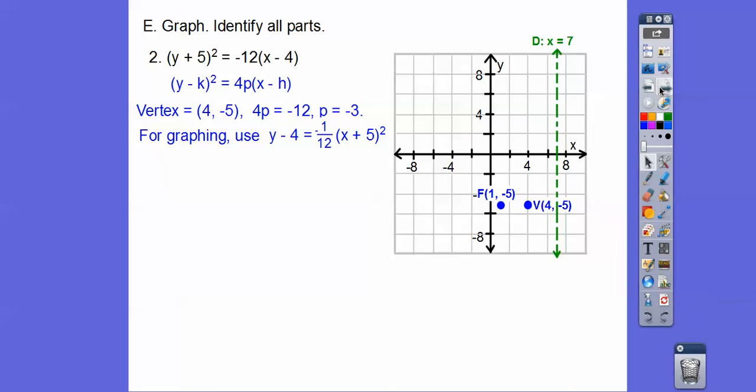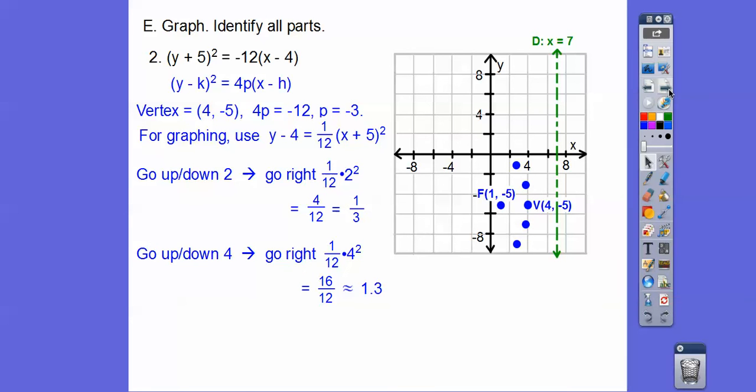So 1/12 of 1 squared, I'm going up and down 2, and it's going to be 1/12 of 2 squared. 2 squared is 4, divided by 12 is 1/3, so barely it goes over. Up 1, barely over right there. So up 4, 16, 4 squared is 16, 16 twelfths is 1.3, so we go from the vertex up 4, so 2, 4. It's going to go to the right, 1.3, so right there.